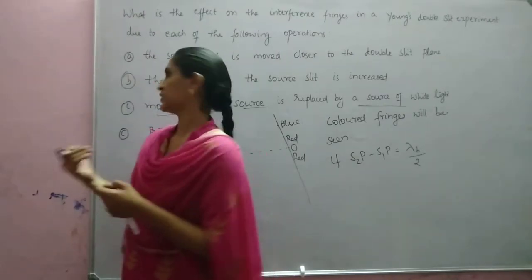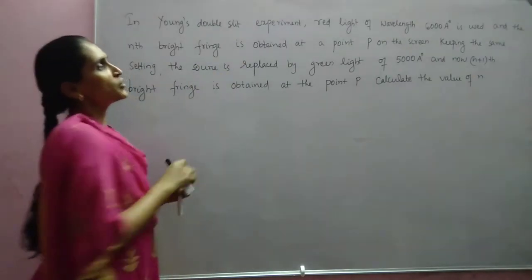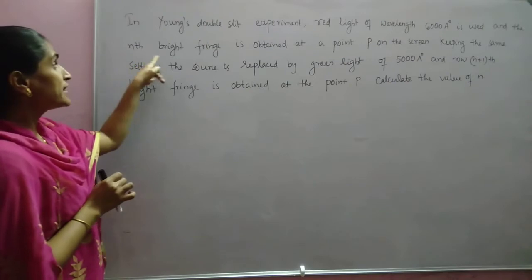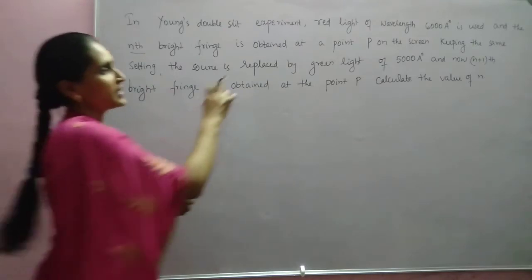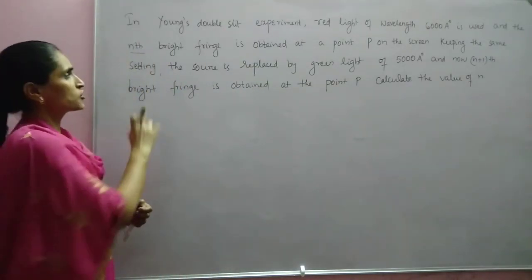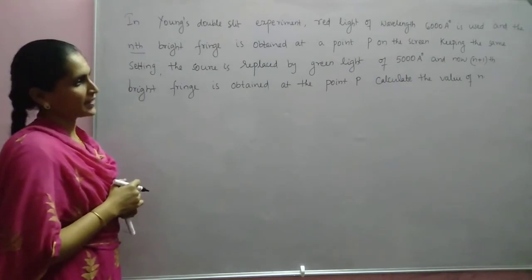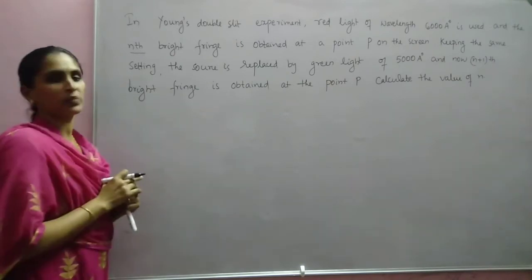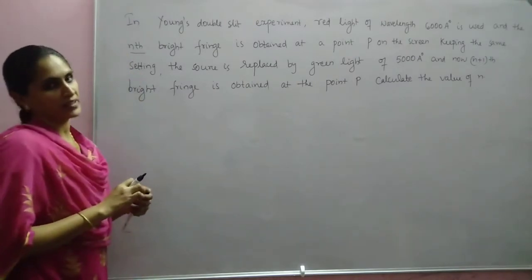The next question: In Young's double slit experiment, red light of wavelength 6000 Angstrom is used and the nth bright fringe is obtained at a point on the screen. Keeping the same setting, the source is replaced by green light of 5000 Angstrom, and now the (n+1)th bright fringe is obtained at the same point. Calculate the value of n.